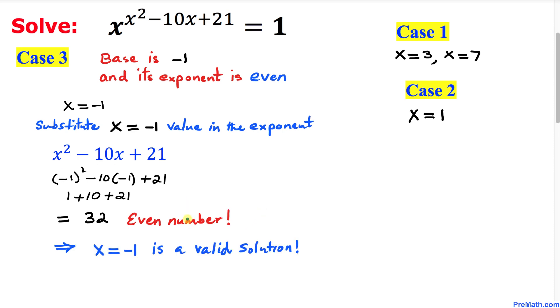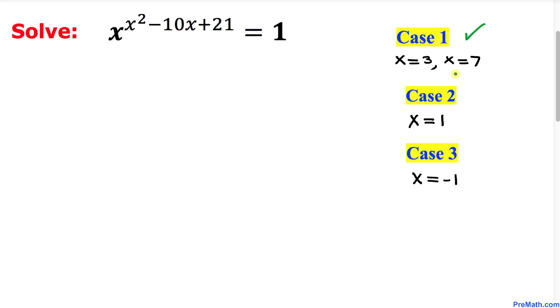So therefore we conclude that x equal to negative 1 is a valid solution. So we can see case 1 has yielded two solutions and case 2 has yielded just one solution as well.